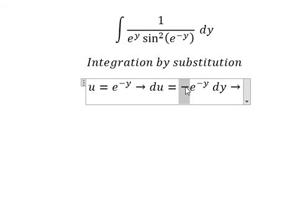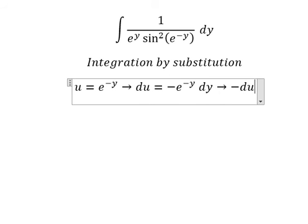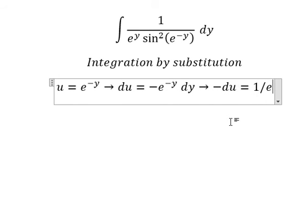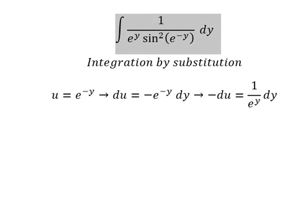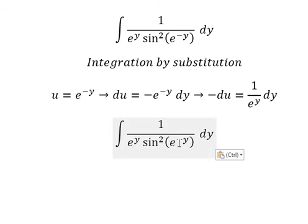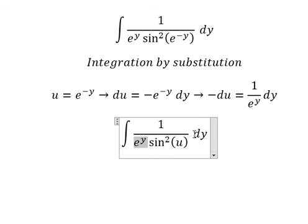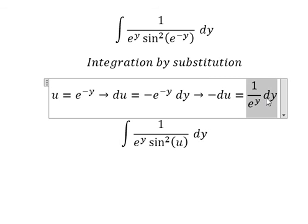Because we don't have the negative sign in here, I will move this one to the left so negative du equals one over e to the y dy. This is u, so now we need to transform this integral into this one.